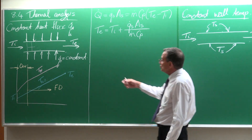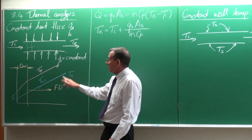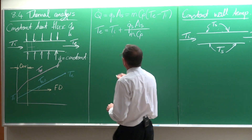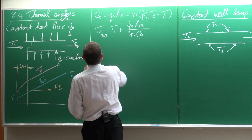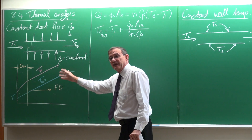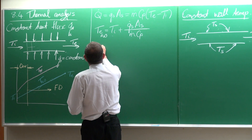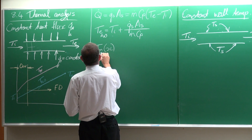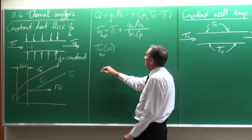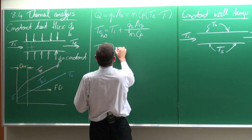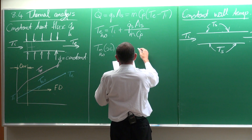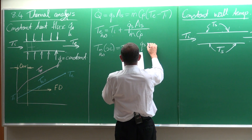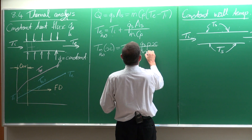If you're going to solve the outlet temperature as a function of the heat flux, you can rewrite this equation as the outlet temperature equals the inlet temperature plus the heat flux multiplied by the surface area divided by the mass flow rate times Cp. The mean temperature of the water at any position x is equal to Ti plus Q-s multiplied by P times X divided by M-dot Cp, where P times X is the surface area, and P equals pi times the diameter if it is circular.